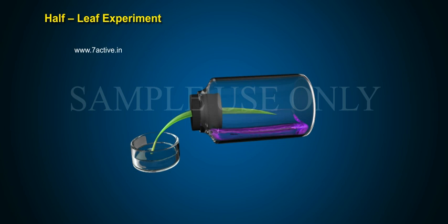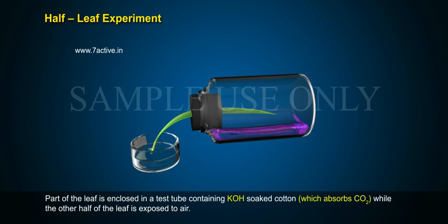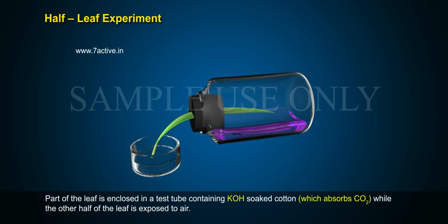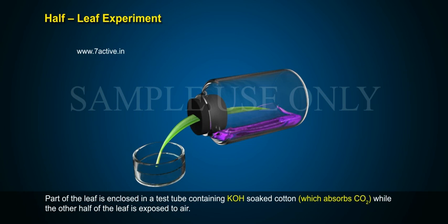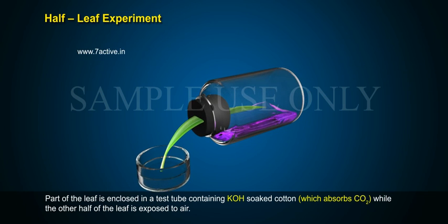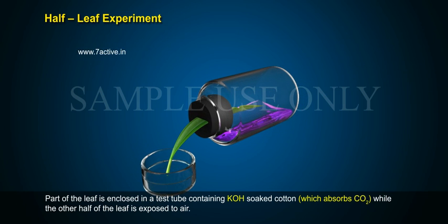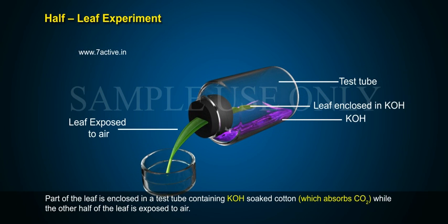Half-leaf experiment: Part of the leaf is enclosed in a test tube containing KOH-soaked cotton, which absorbs CO2, while the other half of the leaf is exposed to air.